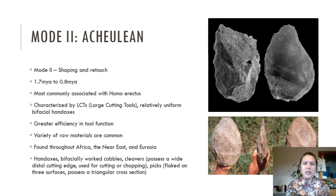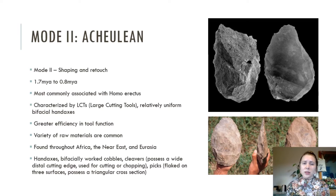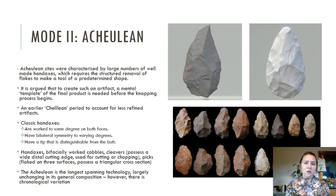The Acheulian industry is defined by the presence of large cutting tools, generally referred to as LCTs — relatively uniform, bifacially worked hand axes. Other common tool types in the Acheulian include cleavers, which possess a wide distal cutting edge and are used for cutting or chopping, and picks, which are flaked on three surfaces and possess a triangular cross section. As with the Oldowan, high levels of raw material selectivity continue into the Acheulian. The main feature of the Acheulian is the structured removal of flakes to make a tool of a predetermined shape, presented as the hand axe.